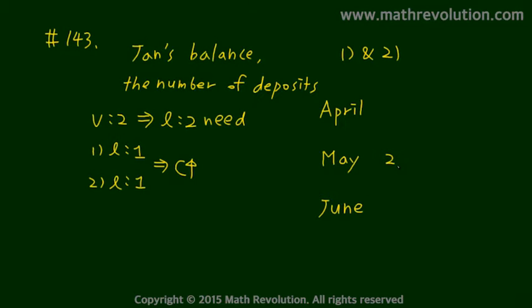May, we're told the closing balance is $2,600. In June, it's something less than $2,675. In April, it's something less than $2,625.